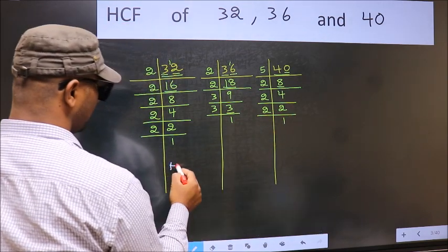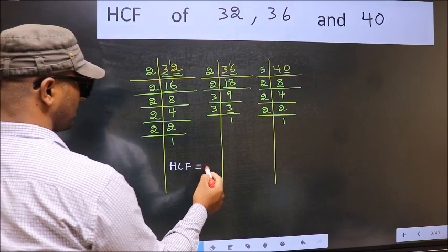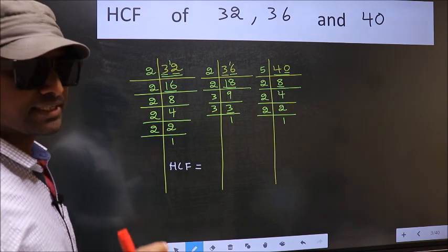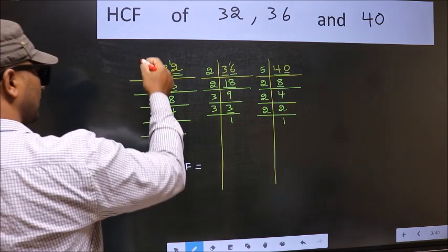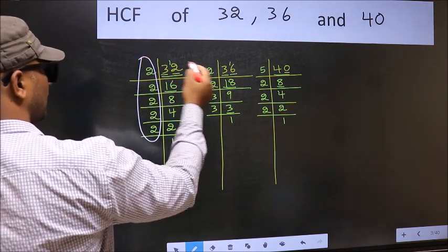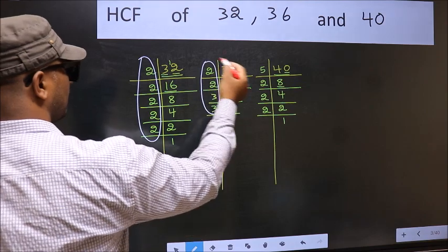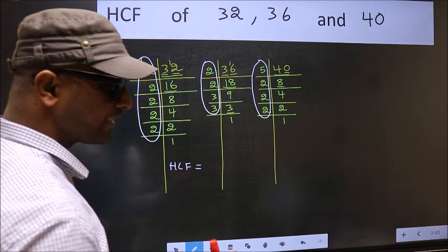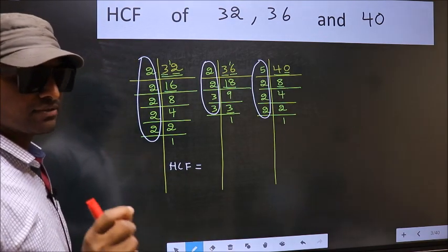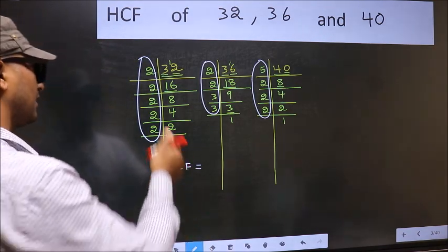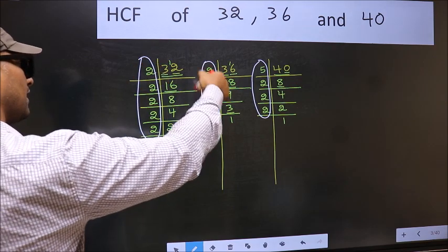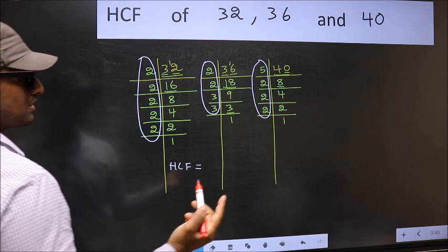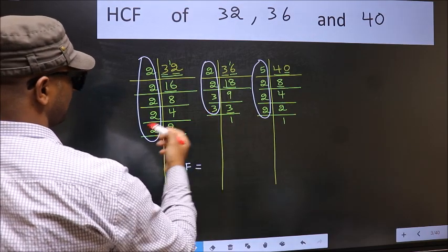So our HCF is, HCF is the product of numbers which should be present in these three places. Here, here and also here. I repeat, HCF is the product of numbers which should be present in here, here, here and also here. So now let us find the numbers which are present in these three places.